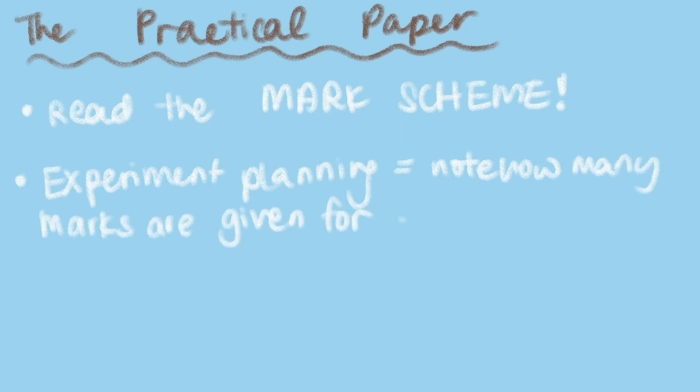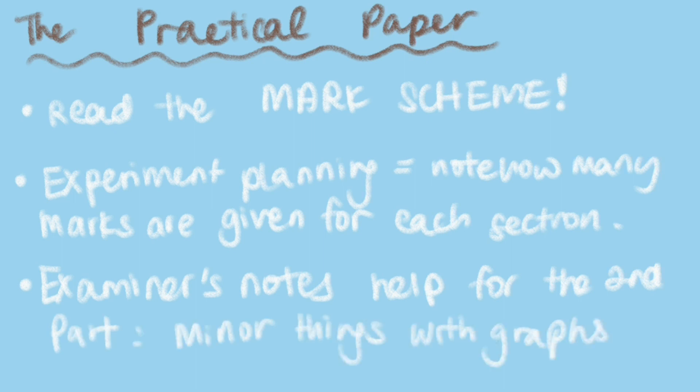Now I'm going to talk about the A2 level. For the A2 practical paper, it's just like the one in AS level. There is a very predetermined structure of question 1 and question 2. For question 1, where you have to plan an experiment, the experiment planning is 15 marks and you have to write everything. The best thing to do is read the mark scheme in a very detailed manner and memorize how many marks are given for each type of answer.